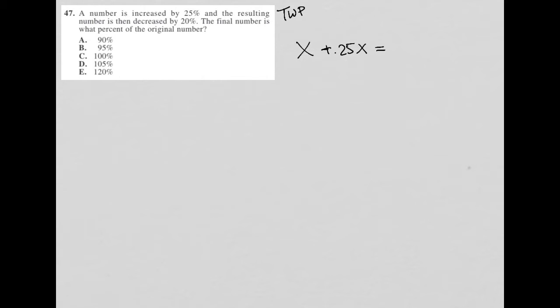is then decreased by 20%. So let's see. X plus 0.25X is the same as 1.25X. So this is the resulting number, 1.25X. But then I'm going to decrease that by 20%. So I'm going to decrease that by 25%, which means, well, I'll do it two ways.